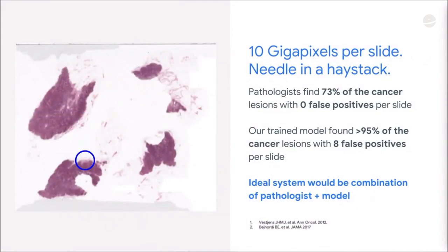It's usually small things like this that are missed. This is not surprising, given that so much information is in each slide. Pathologists can actually find 73% of the cancers if they spend all their time looking through with zero false positives per slide.